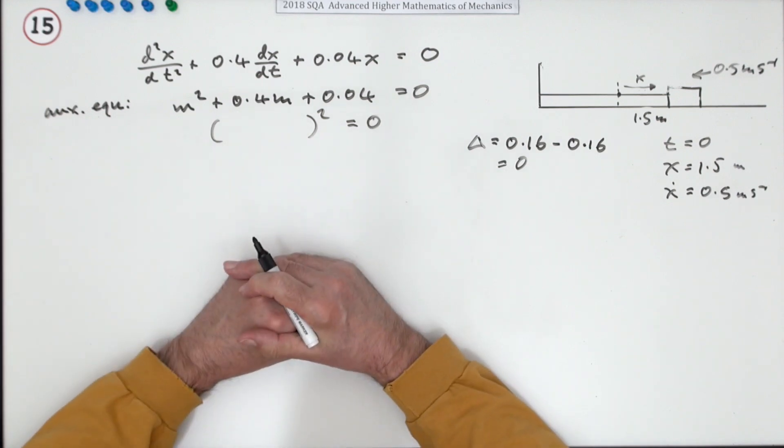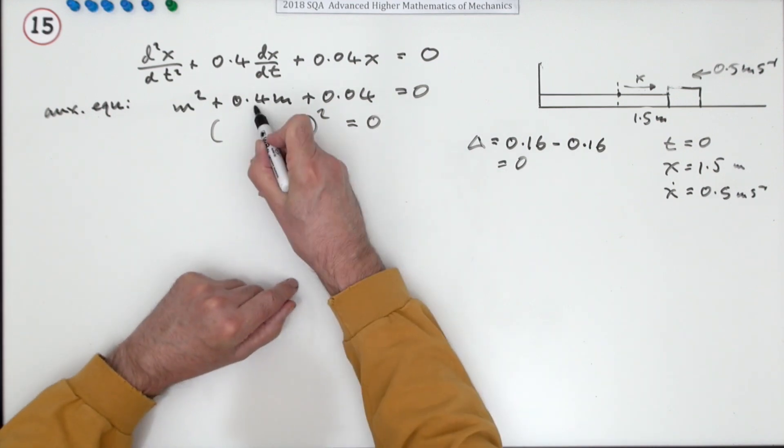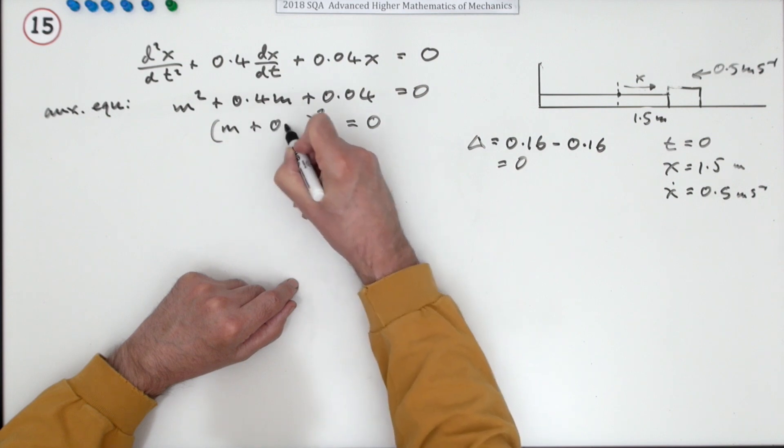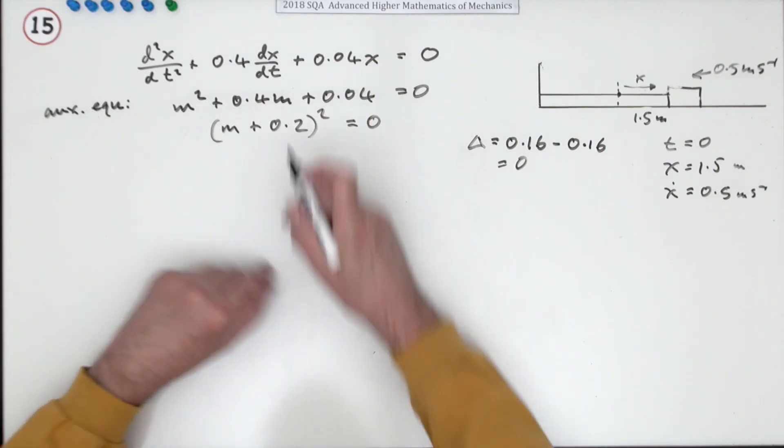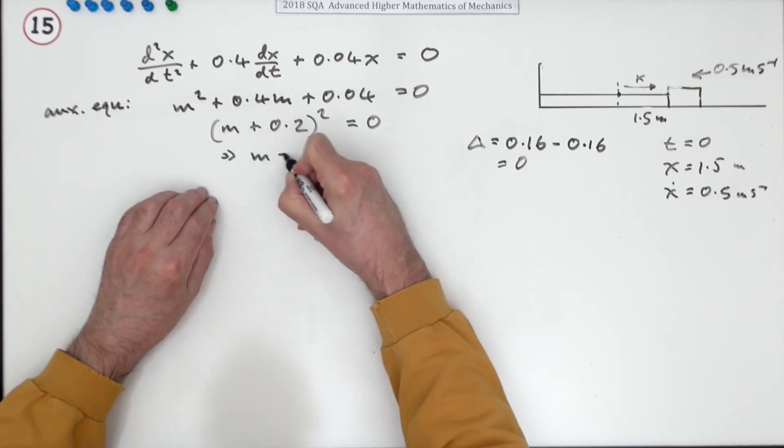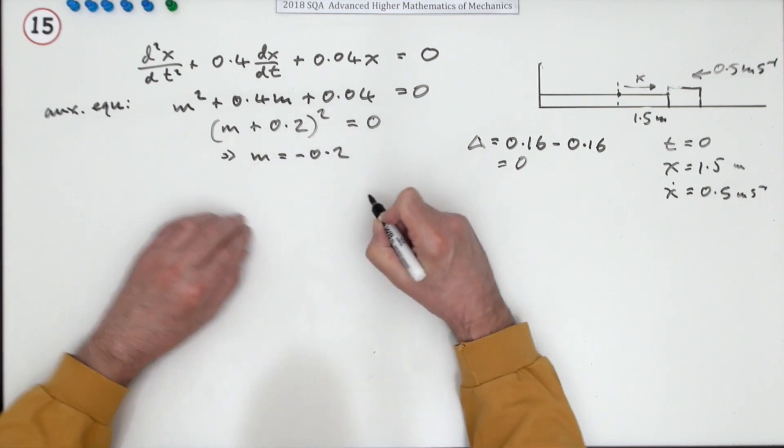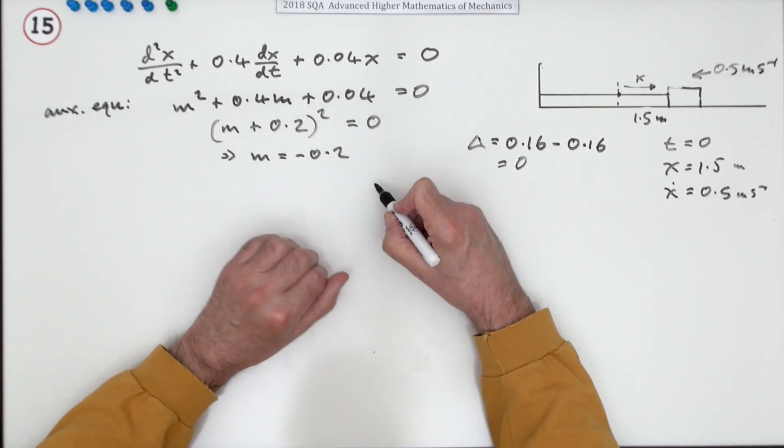There's a pair of equal roots to that, and if that's the case, that must be twice it, so it must be m plus 0.2 squared. So if that's the case, that means m equals negative 0.2 twice, if you like, repeated.